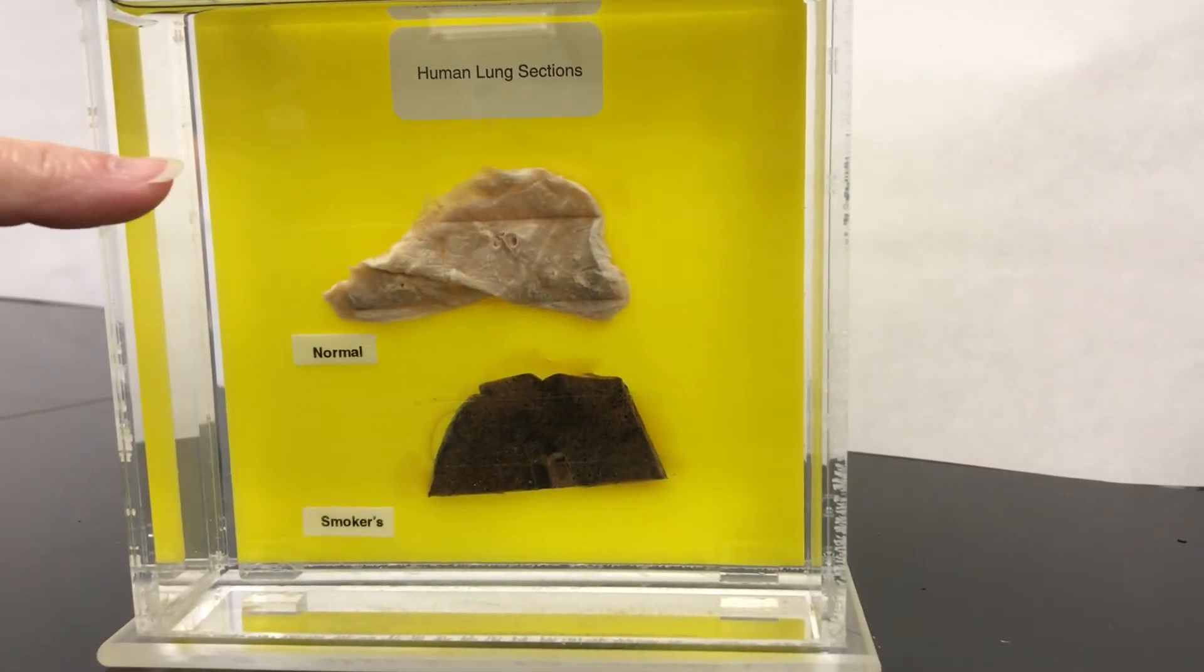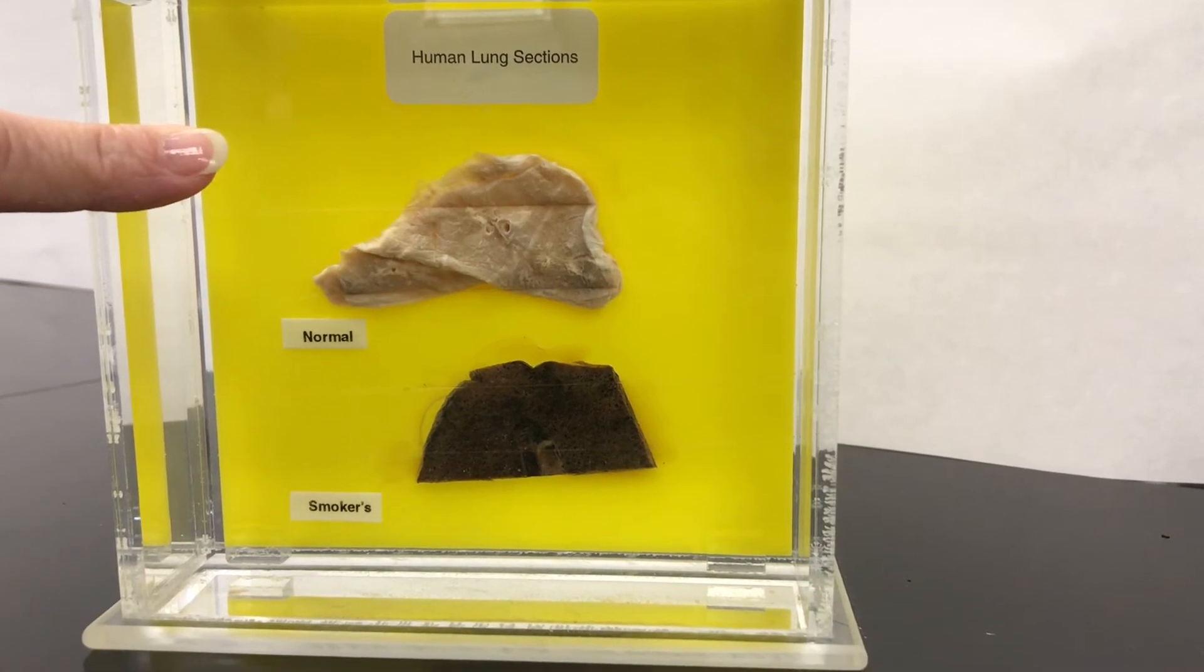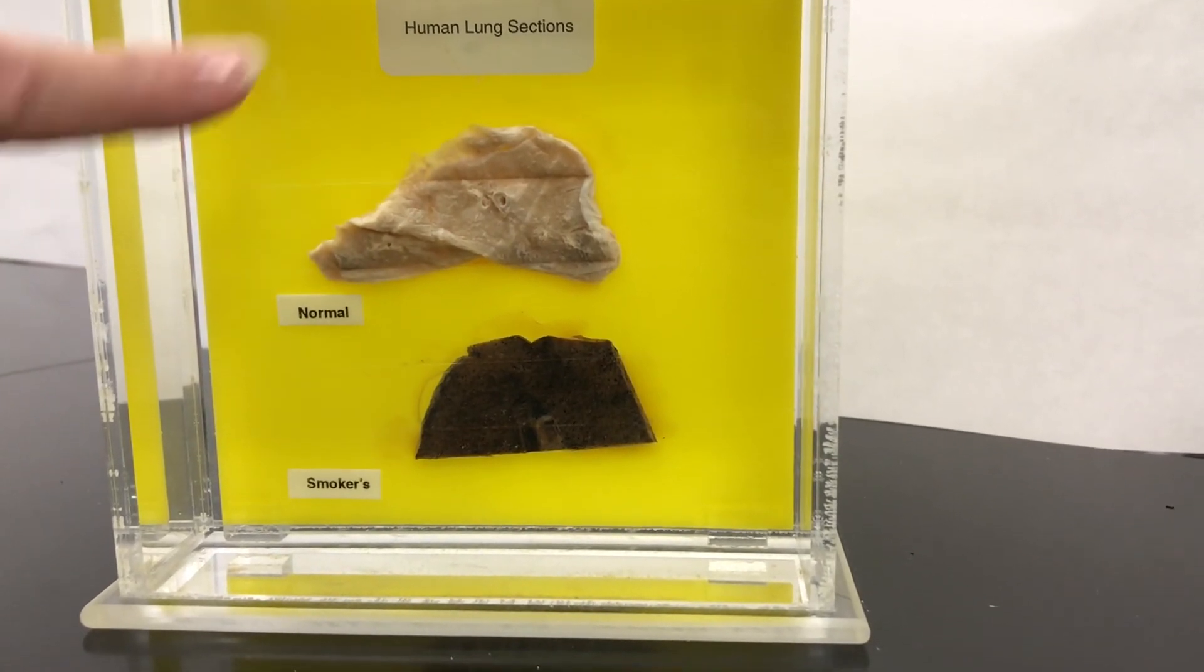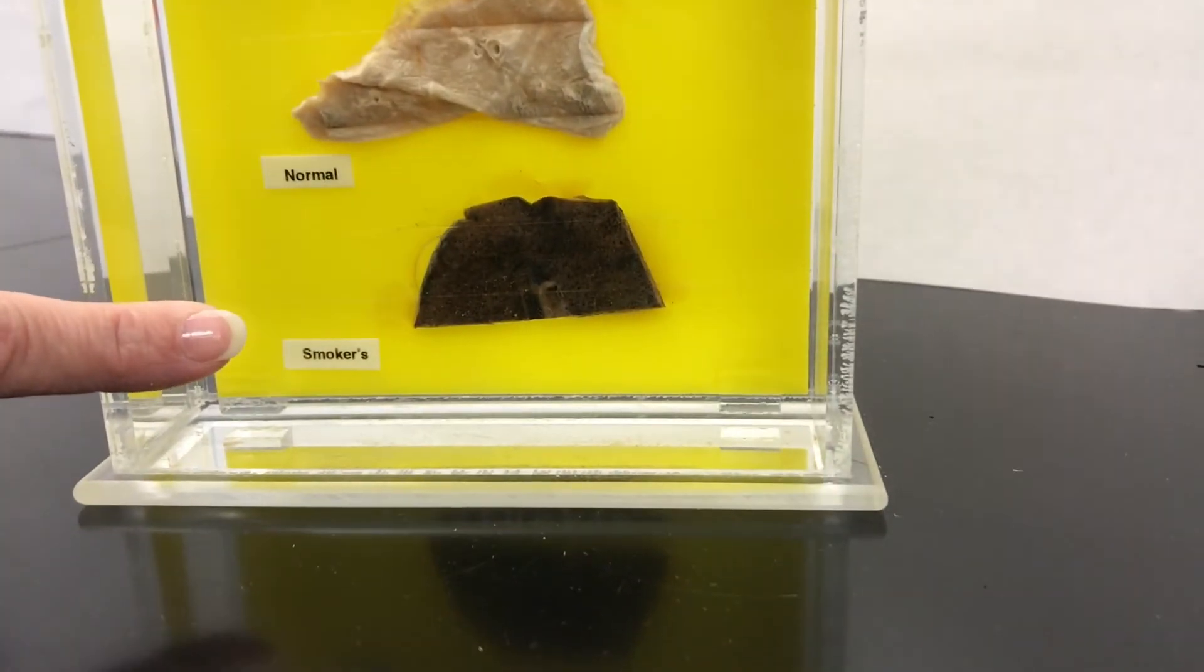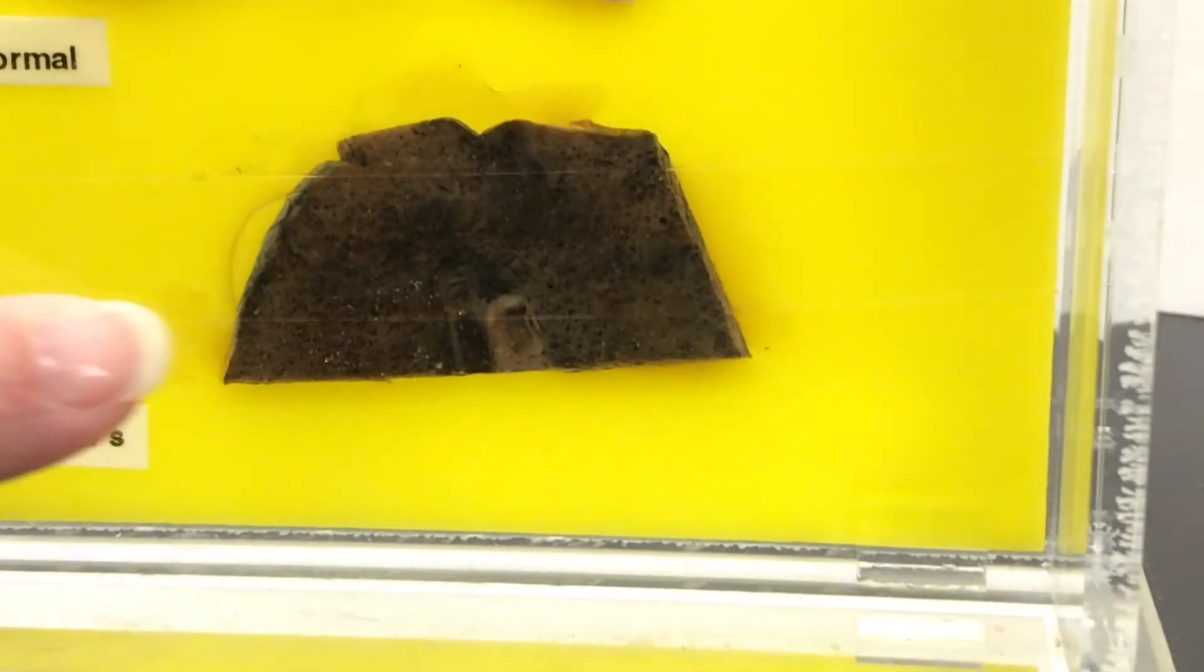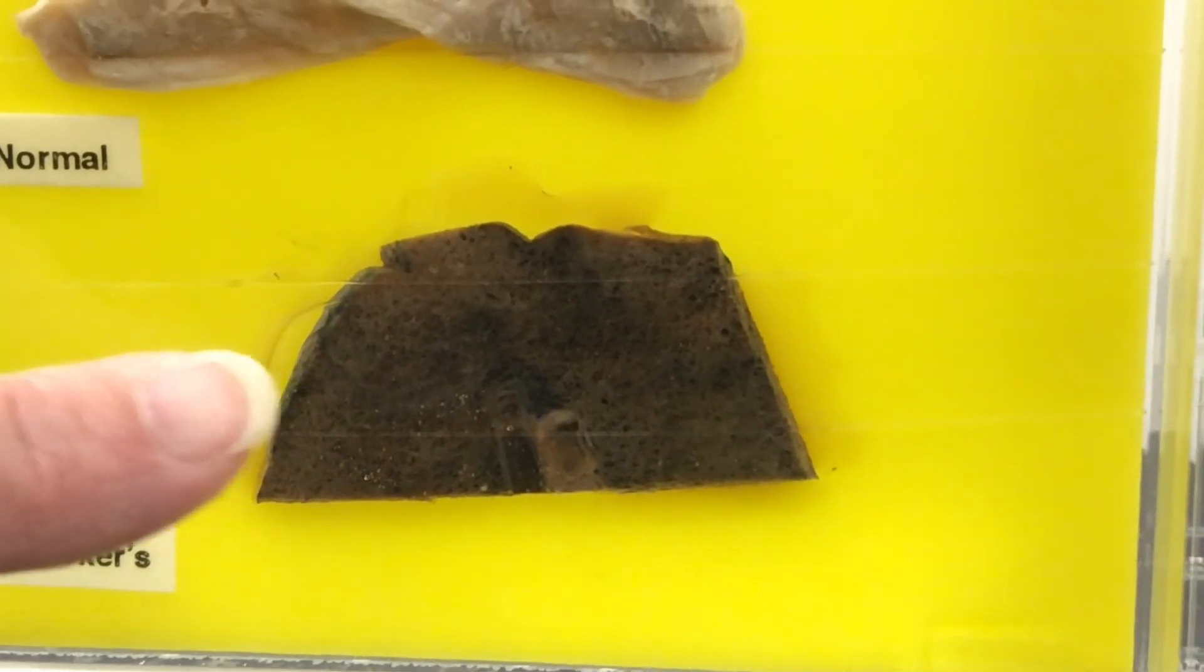This is actual tissue from lungs. So this is normal tissue. If it was in the body, it would be more pink because it would have a blood supply. This is a piece of lung from someone who has been smoking a lot, and this shows the tar buildup in the lung tissue.